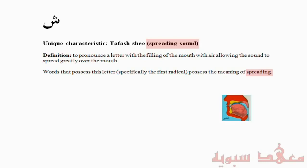In this video, I wanted to show the uniqueness of the Arabic language and specifically about the characteristics of letters and when they're included in words. We're talking about the letter Sheen. There's a unique characteristic of this letter, which is called, in Arabic, a tafeshi, which means a spreading sound.